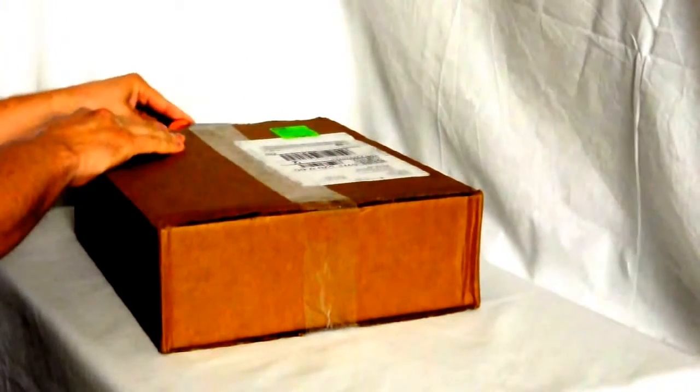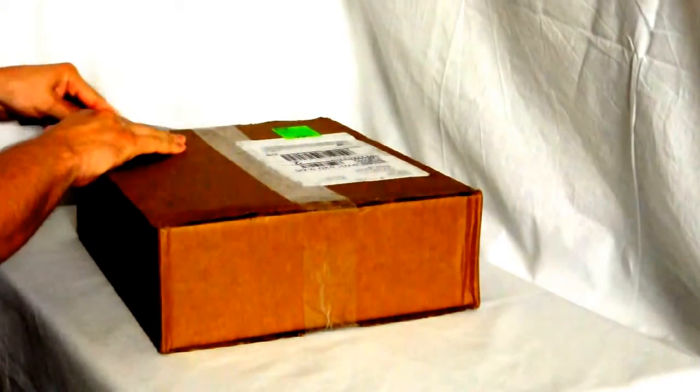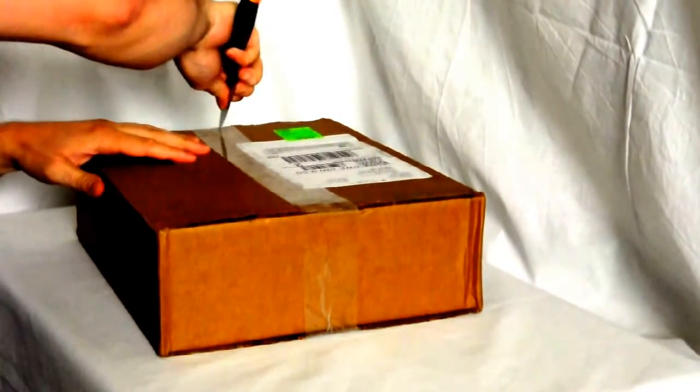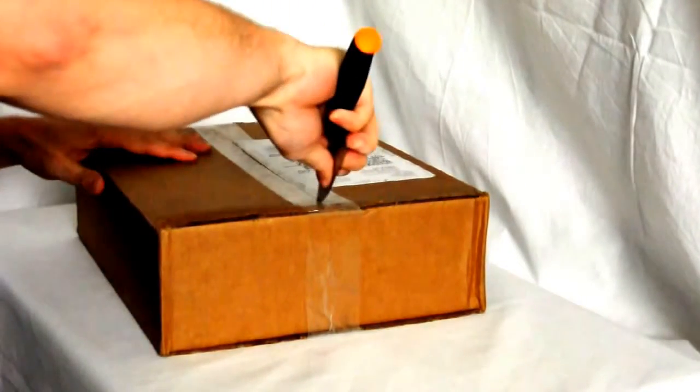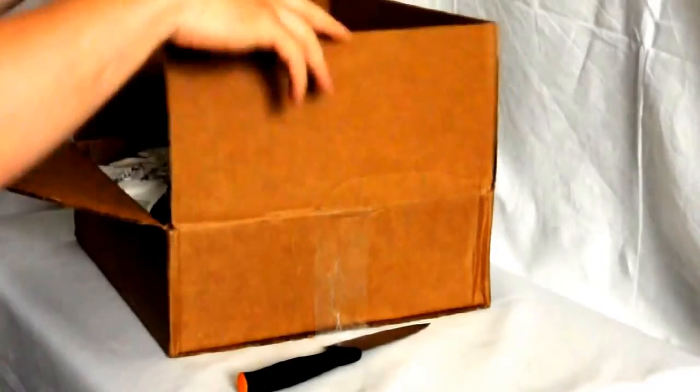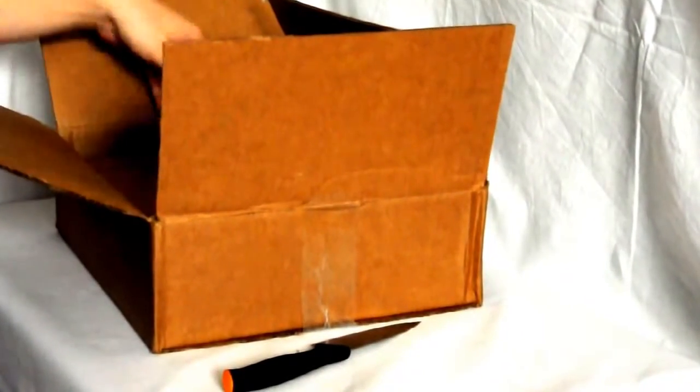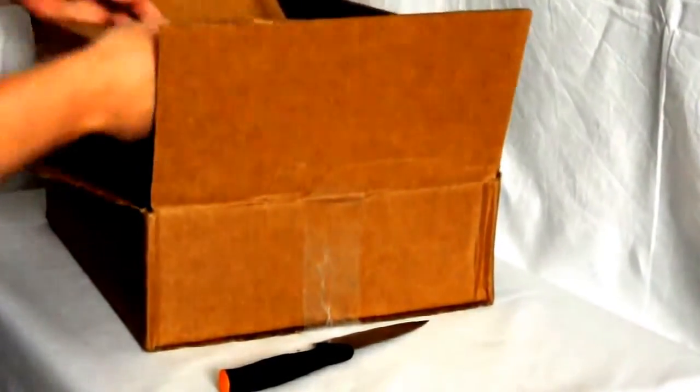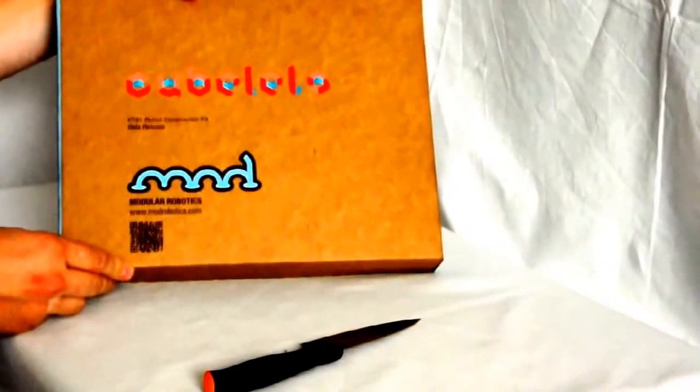This is the shipping carton. It seems to have survived nicely. On this box there was nothing of significance. Some shipping paper and here is then the box with the cubelets.